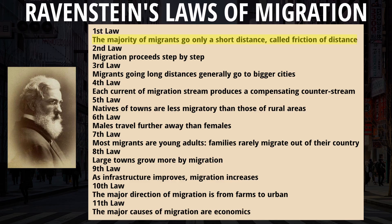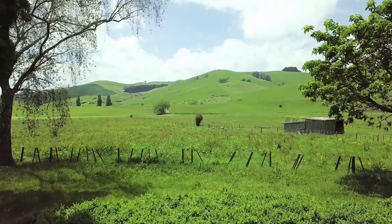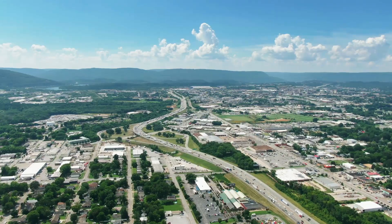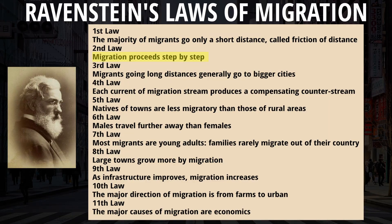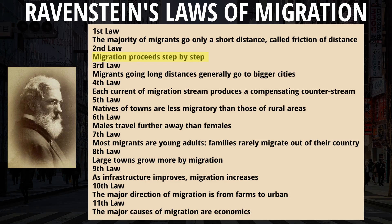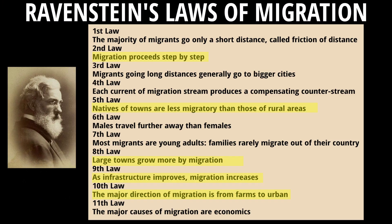There's also the notion of step migration — that migration occurs in stages, going from small towns to a bigger city, to an industrial hub, then to a metropolitan area. This also relates to the 5th, 8th, 9th, and 10th laws, explaining that people are less likely to move from a big city to a farm, and thus large towns grow more by migration since they have better infrastructure and services available.